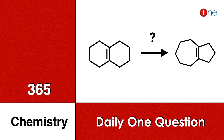Welcome to One Chemistry. This is the 365 Chemistry series — one daily question for you. Here you have an alkyne with an alkene, and you are converting it into a seven-membered and five-membered ring system. You have to find the conversion reaction and the number of steps involved.